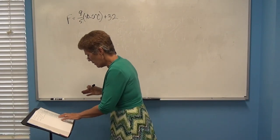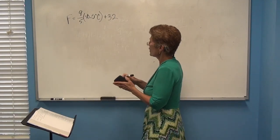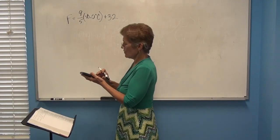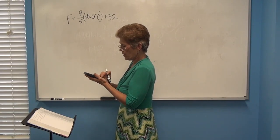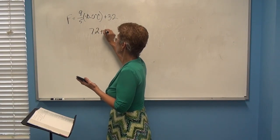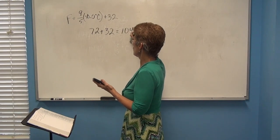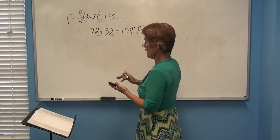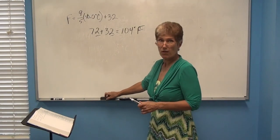Now it's just a matter of doing the math, but watch the significant figures. So: 40 times 9, divided by 5, equals 72, plus 32. That gives us 104. You can go to the ones place. That's 104 degrees Fahrenheit — pretty hot!